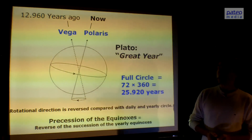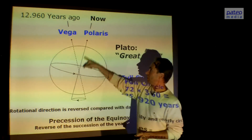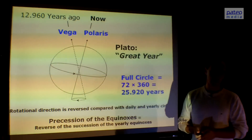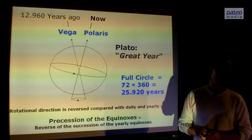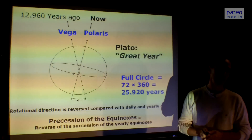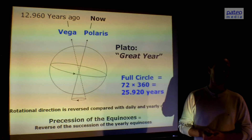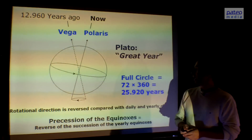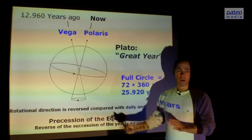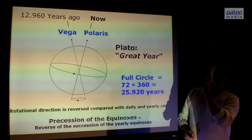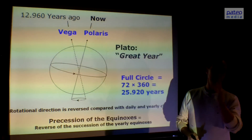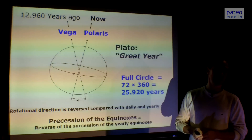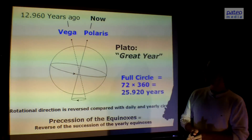At this moment the Earth axis is pointing towards the Polestar. But about 13,000 years ago it pointed to a totally different star — the Vega star, the brightest star in the constellation of Lyra. That means that Earth is tumbling; it makes a very slow tumbling movement. A full circle takes about 26,000 years, and Plato referred to that cycle as the Great Year.